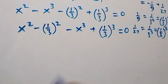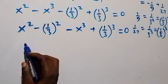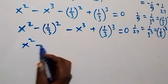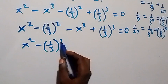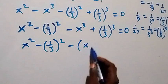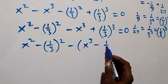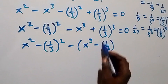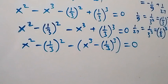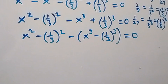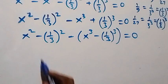From here, let's factor minus out. What we have is x squared minus (1/3) squared, minus into bracket x cubed minus (1/3) cubed, close bracket, now equals zero.